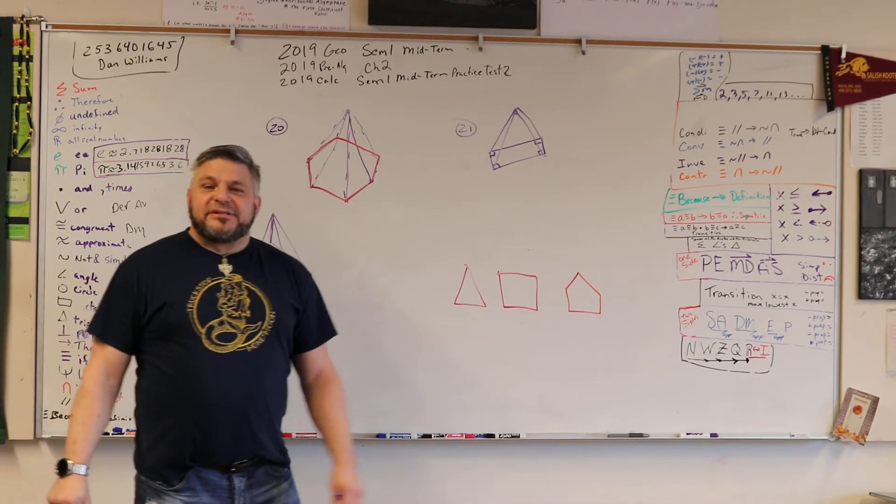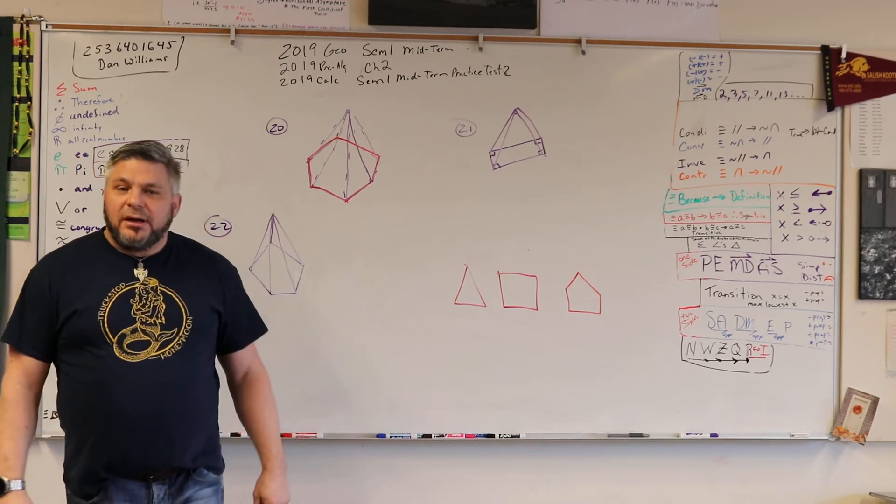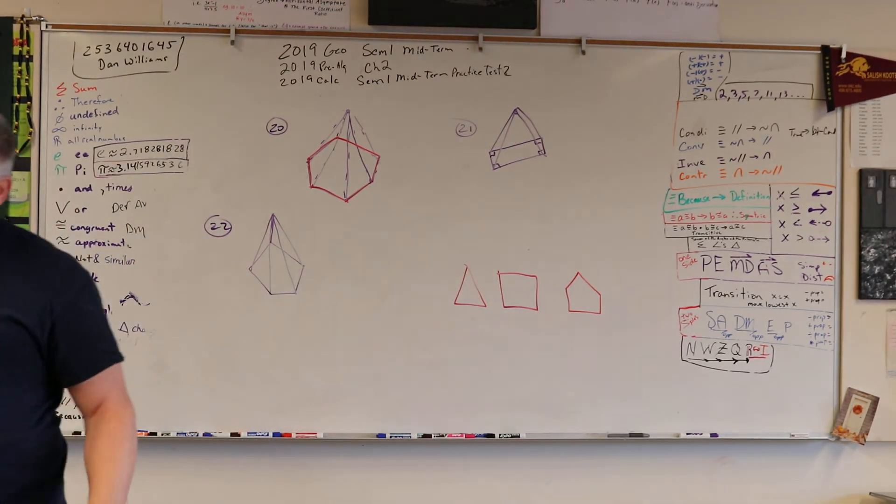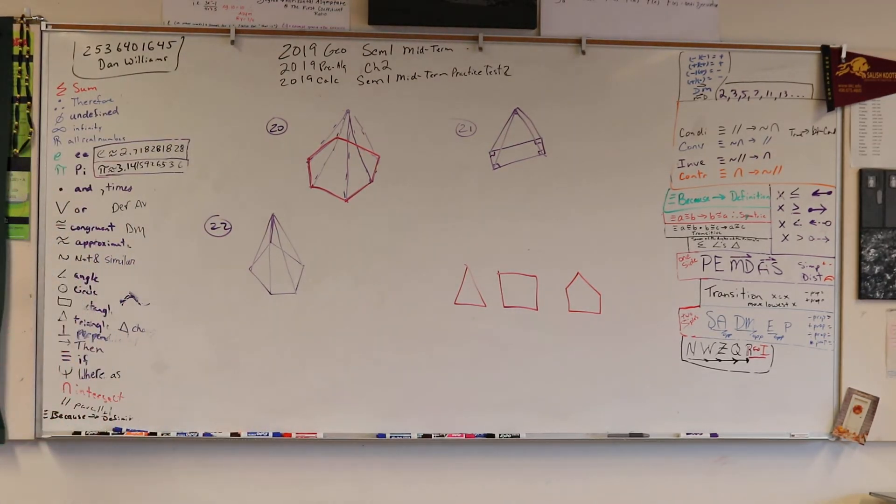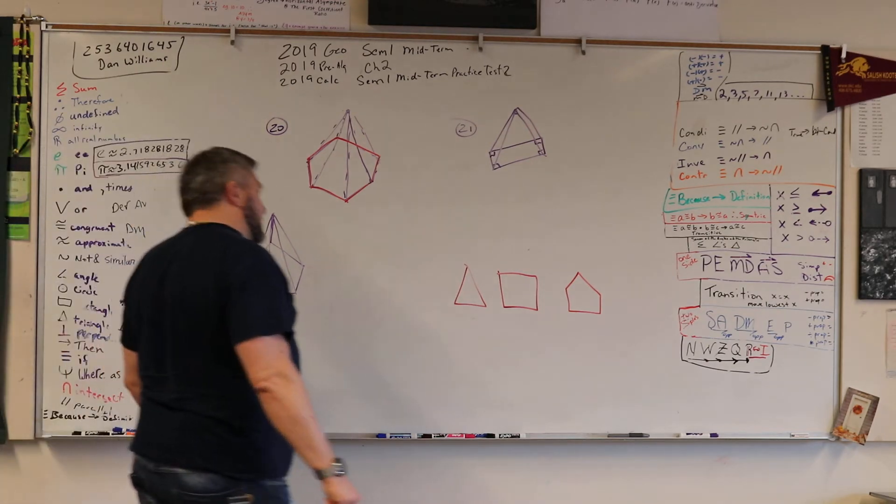And a six-sided shape? Octagon. No, that's eight-sided shape. Octagon, eight sides. Hexagon. Hexagon.